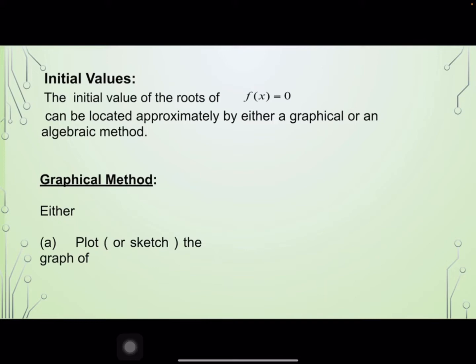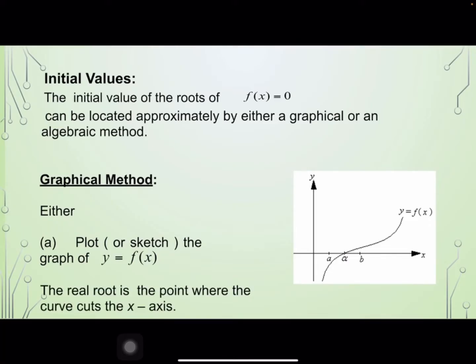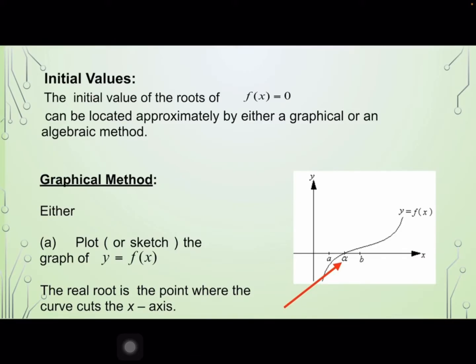Now we go to the graphical method. We either plot or sketch the graph of f(x). For instance, we have this curve for f(x). The real root is the point where the curve cuts the x-axis. For this example, the root is alpha.